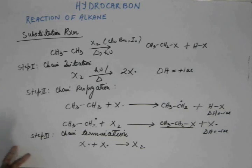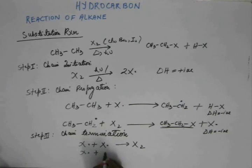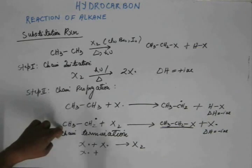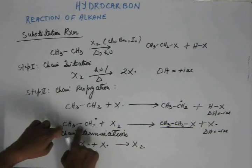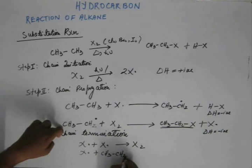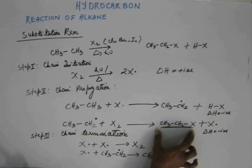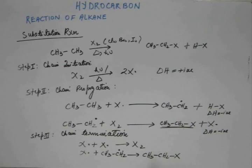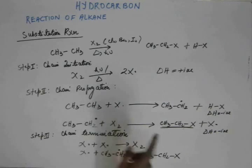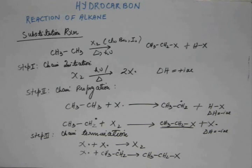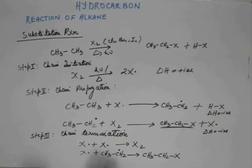Another reaction that can terminate the chain is when X-dot reacts with the ethyl free radical. There will be multiple X-dots and multiple ethyl free radicals concurrently present in the system, so there can be a reaction between X-dot and the ethyl free radical. When that happens, we have haloethane. Now, haloethane is the desired product, but this step is not desired — because when we want haloalkane to be produced, we also want another halogen free radical to be produced alongside it, which would go into the next reaction producing more haloethane.